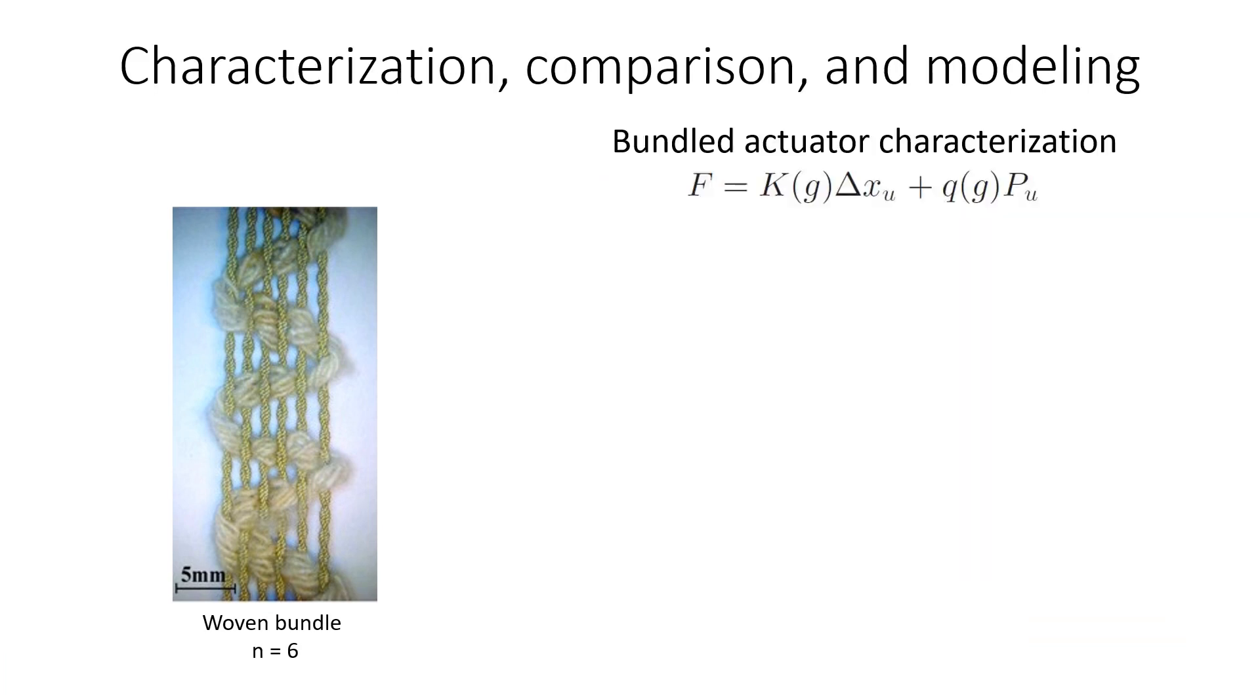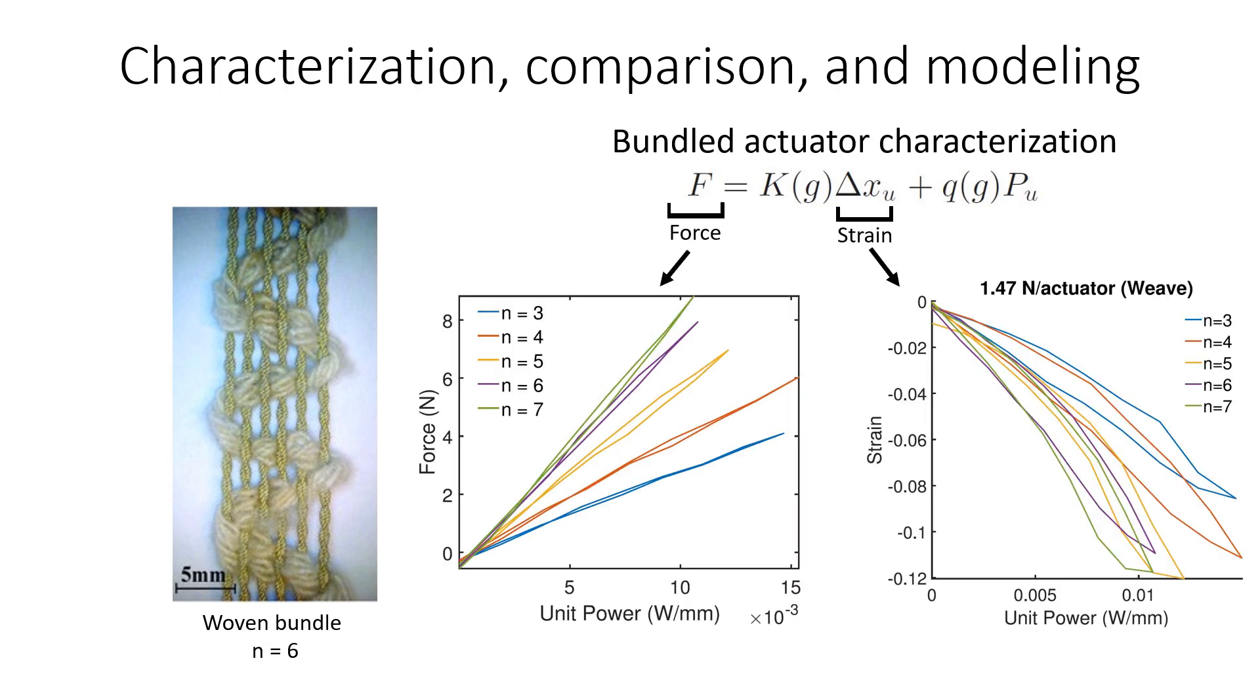To compare the performance trends of the different bundles, we conduct a combination of force and strain experiments to characterize the actuation as a function of the input power. As seen in the figure for woven bundles, we can observe the input-output relationship between force, strain, and power for different size muscles.